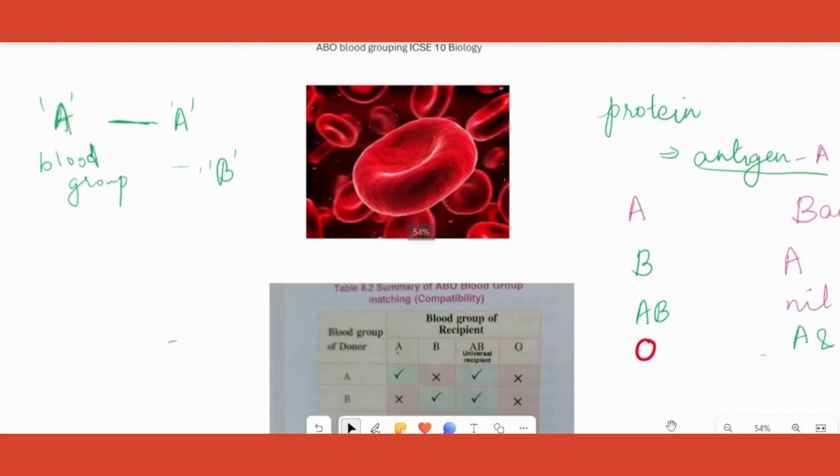One more thing for ICSE-10 biology: other than this antigen A or B or both or nil, there is another antigen which may or may not be present. That antigen's name is Rh factor. If Rh factor is present in a person along with his or her blood group, we will put a plus. If absent, we'll put a minus. For example, if a person is having antigen B and Rh factor, the blood group will be B plus. If Rh is absent, the blood group will be B minus. I hope that is clear. Thank you, children.